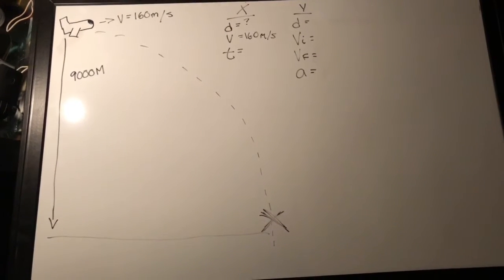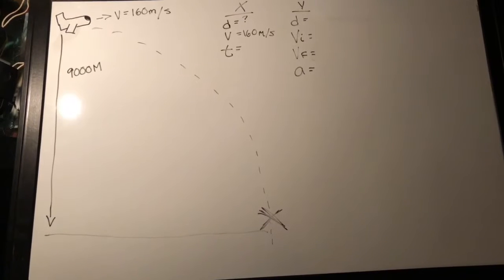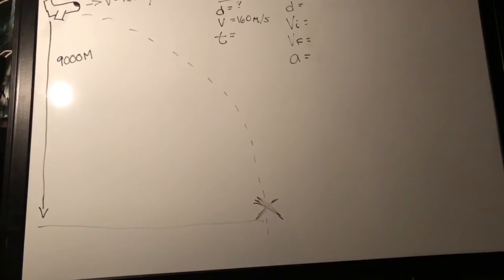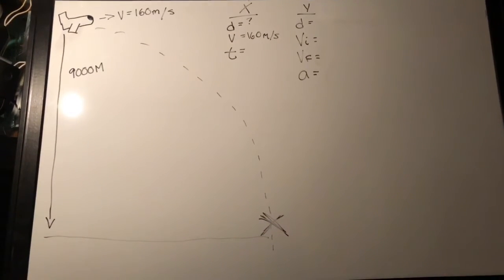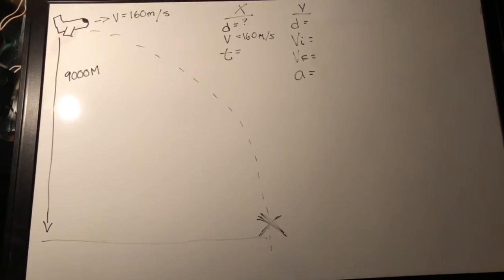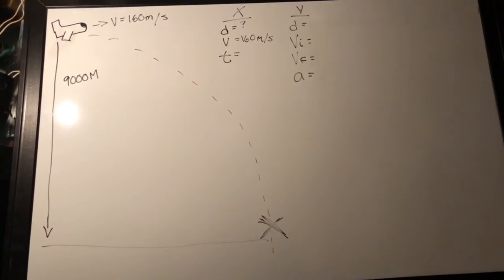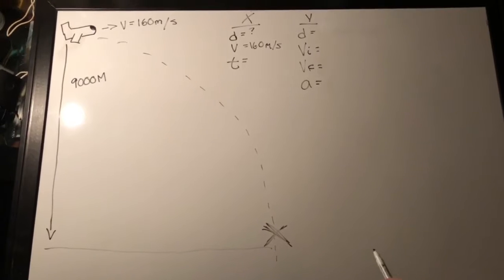For example, if you have a plane going 160 meters per second at an altitude of 9,000 meters, and we would like to find the distance that far away from the target for it to drop the bomb for it to hit and explode at this point.